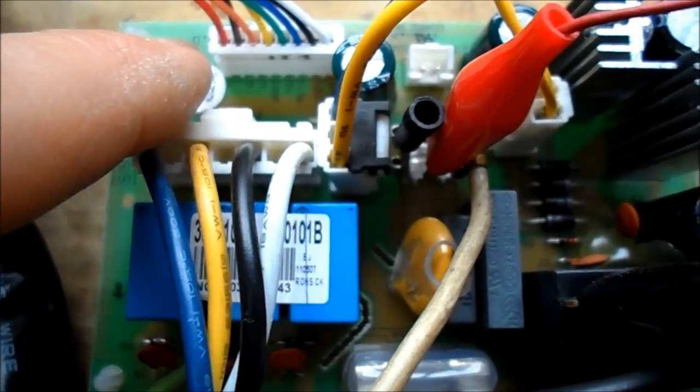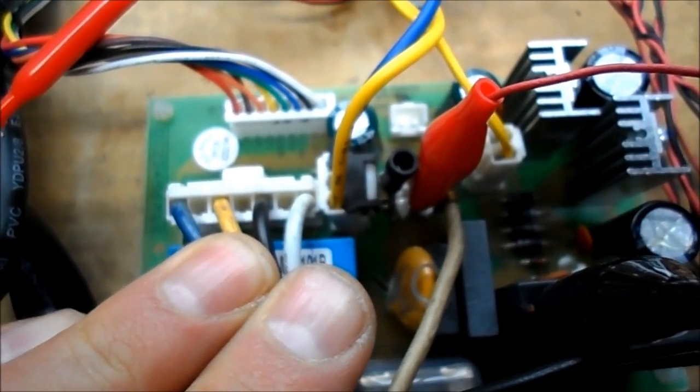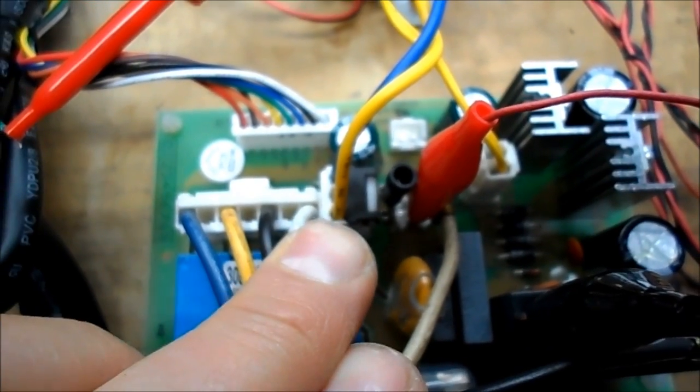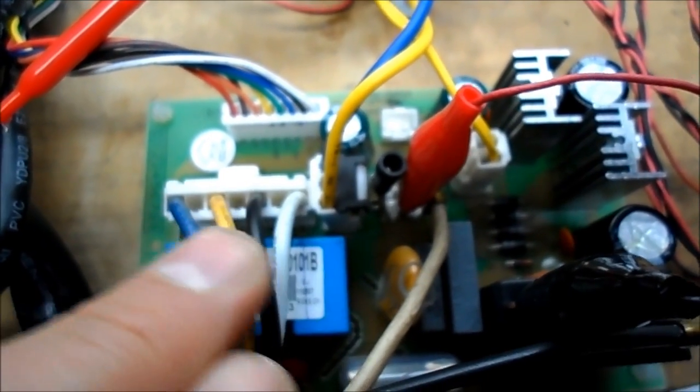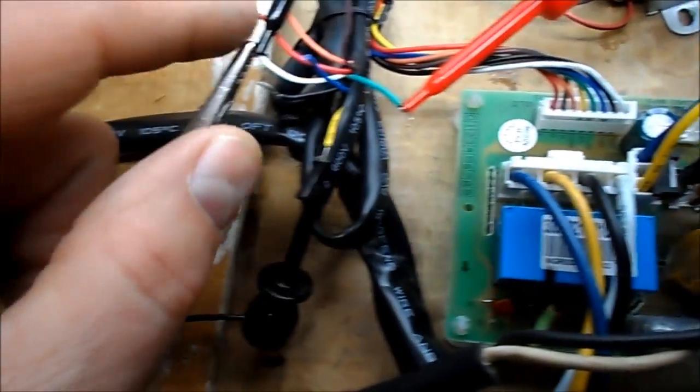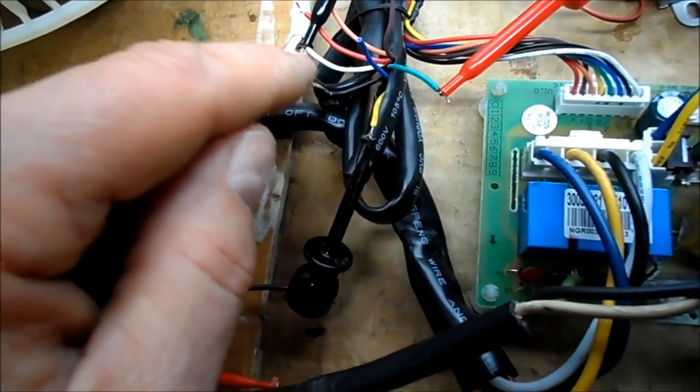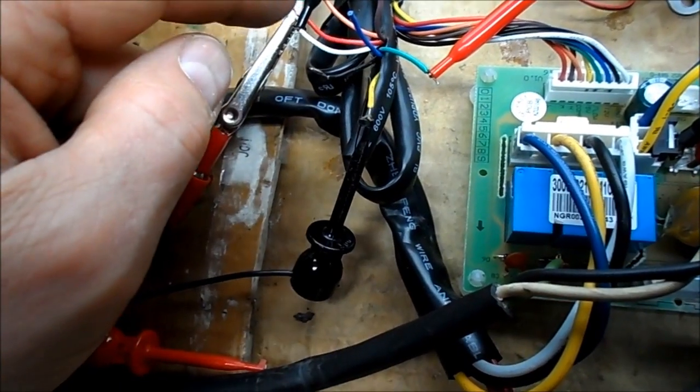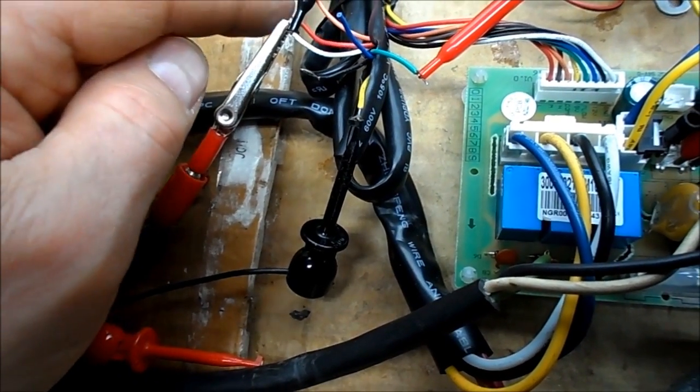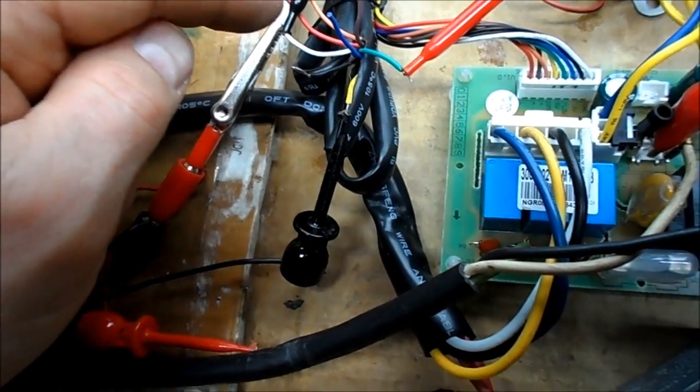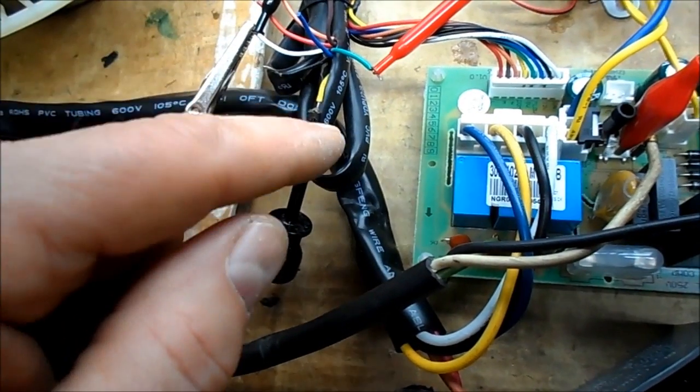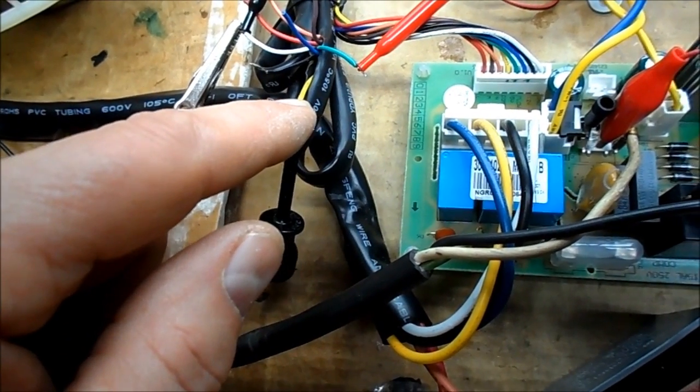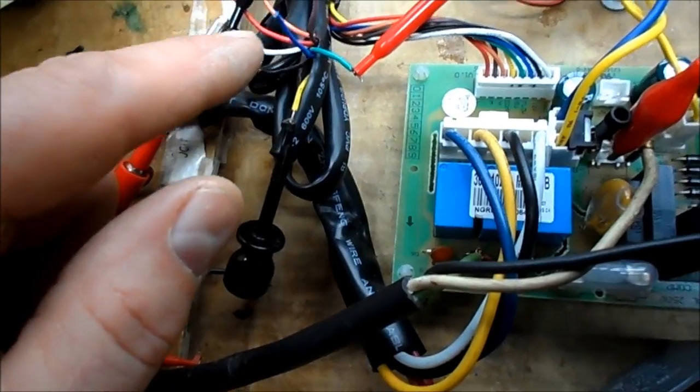So I'll explain what they do. This is the fan motor here: neutral, low, medium, high, or high, medium, low. I don't know which winding is which. So again, after looking at this, I have a jumper on the white which is ground and I've gone ahead and stripped each one of these.